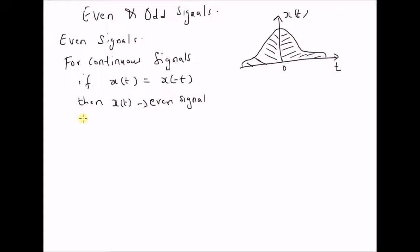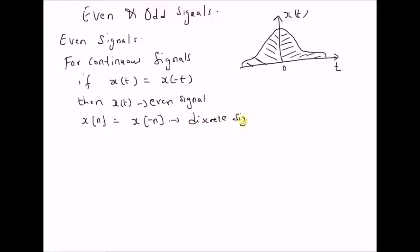Similarly, for discrete signals, x of n is equal to x of minus n. This is for discrete signals. So here x of n is an even discrete signal.